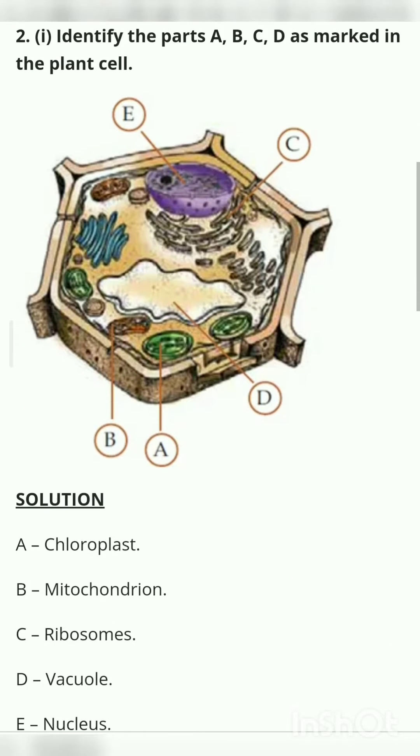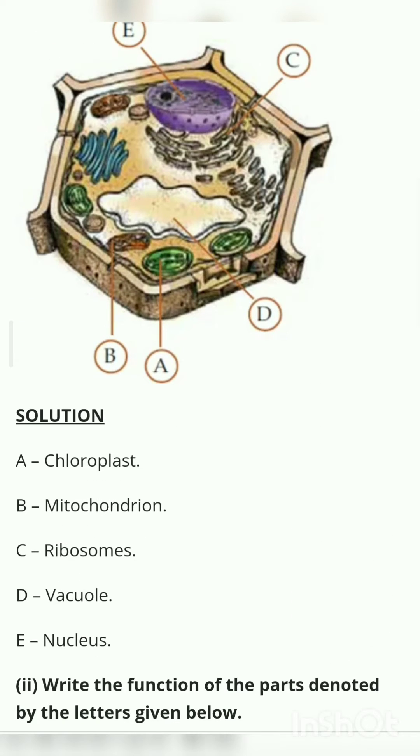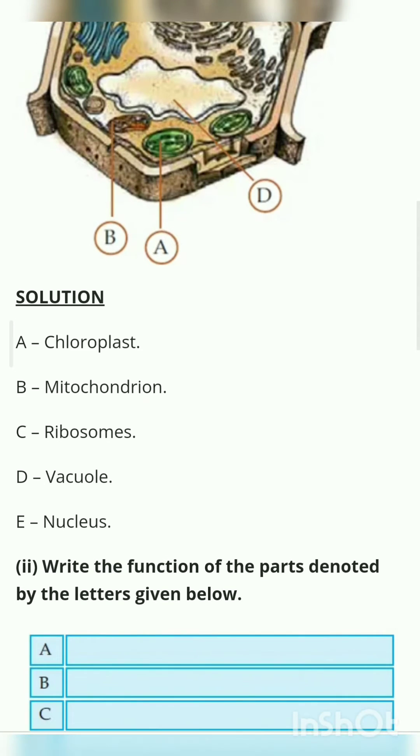The solution: A - Chloroplast, B - Mitochondrion, C - Ribosomes, D - Vacuoles, E - Nucleus. The next question: find the functions of the parts denoted by the letters given below.